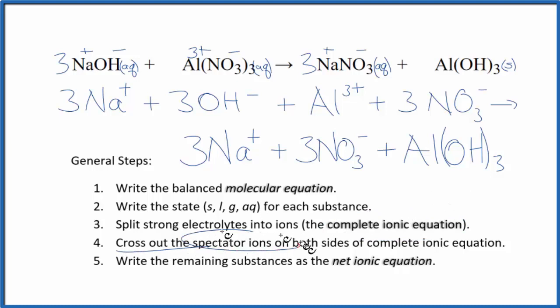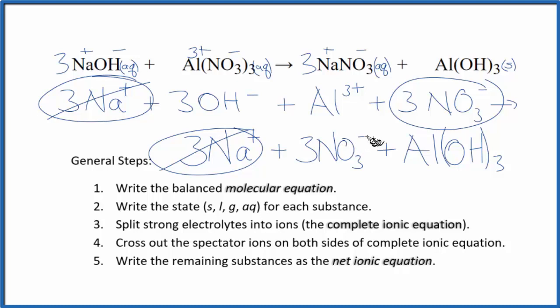Now we can cross out these spectator ions. They're on both sides of that complete ionic equation. They haven't changed. So we're not interested in them. I can see in the reactants, I have three sodium ions. And in the products, three sodium ions. Get rid of those. Three nitrate ions. And in the products, three nitrate ions. Get rid of those.